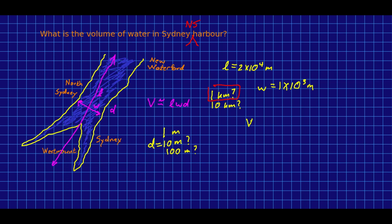And so now I can estimate the volume. Because it's just the length times the width times the depth. And that's 4, 7, 8. So 2 times 10 to the 8 metres cubed.